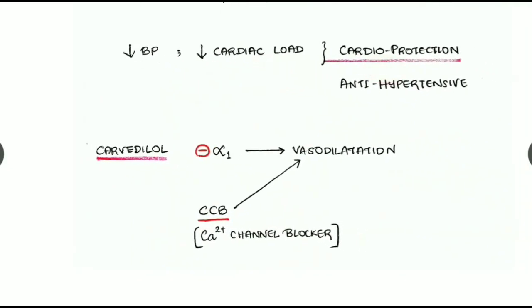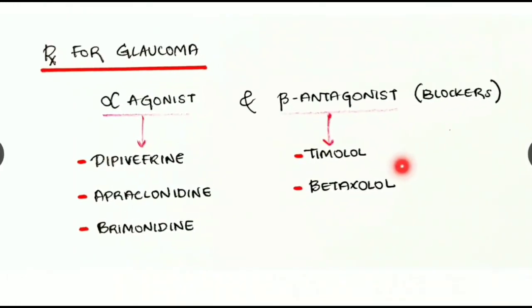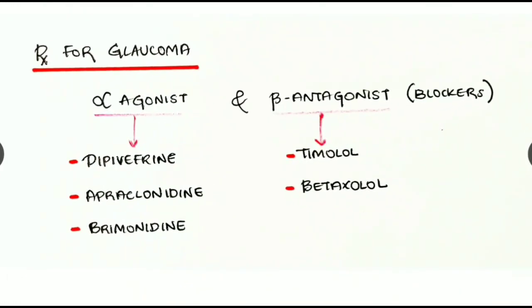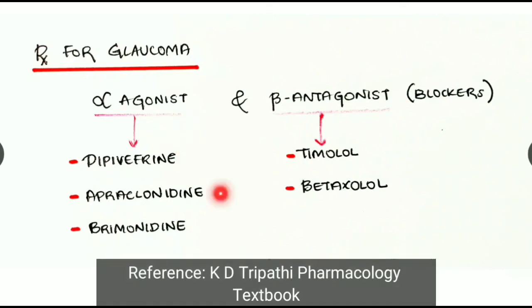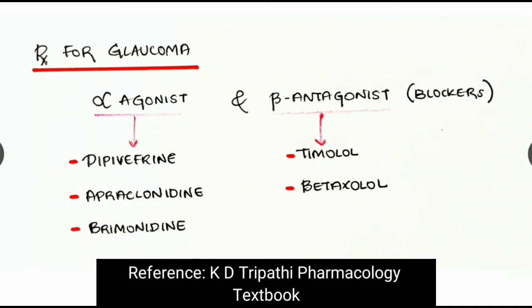To summarize the treatment for glaucoma: both alpha agonists and beta-2 antagonists help by reducing aqueous humor secretion. Examples of alpha agonists used for glaucoma are dipivefrin, apraclonidine, and brimonidine. Beta blockers used are timolol and betaxolol. This concludes the overview of alpha and beta blockers.